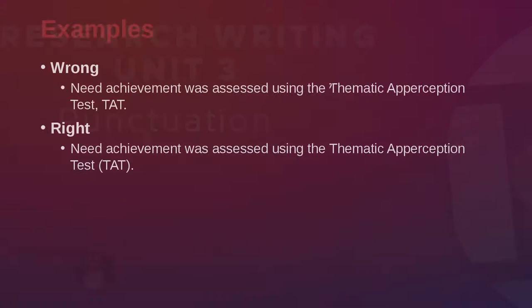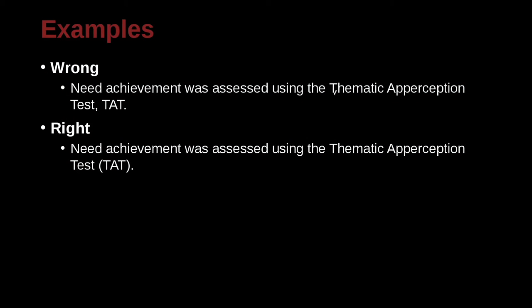Need Achievement was assessed using the thematic appreciation test. So this is some kind of special test name, and it's often called TAT. So how do you do that? The first time, you put it inside of parentheses, and then later you would just write TAT without the parentheses. But the first time, you need to write the whole word, and then write the abbreviation.